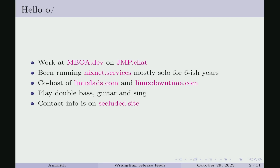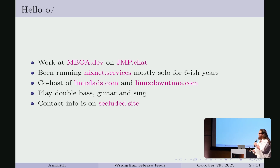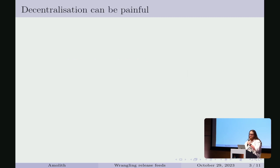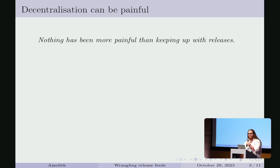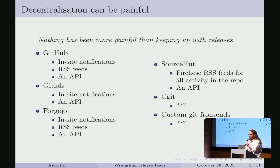I'm Amalith and I work at Mboa on a project called JMP. I've been running NixNet.services mostly solo for about six years — it's a collection of open source web services that I've been operating publicly without charge. In all that time, the most painful part of running NixNet has been keeping up with the releases, because all the different platforms where that software is developed have different capabilities: some have in-site notifications, some have RSS feeds, some have APIs, and some have nothing.